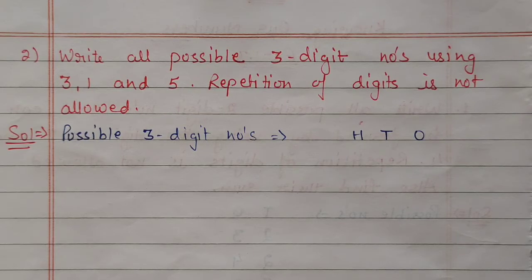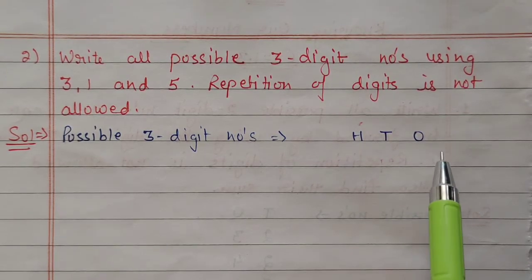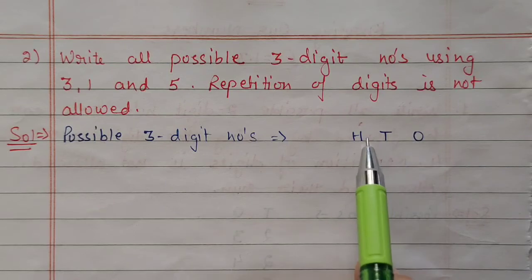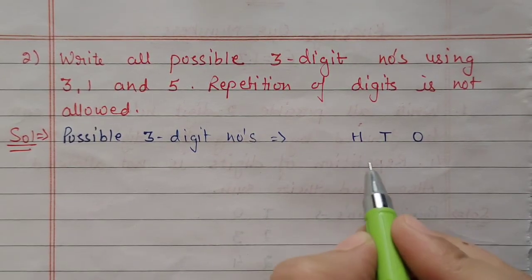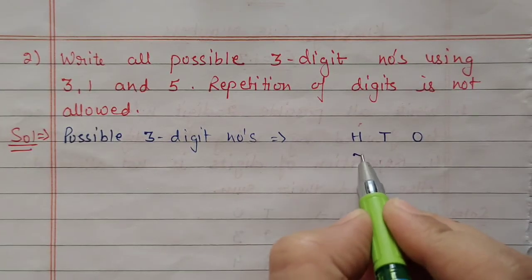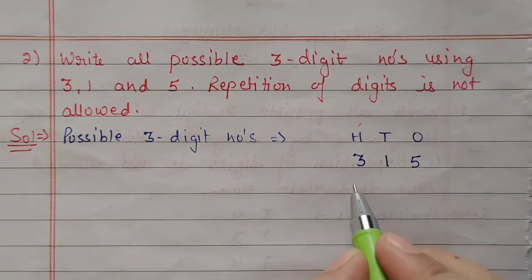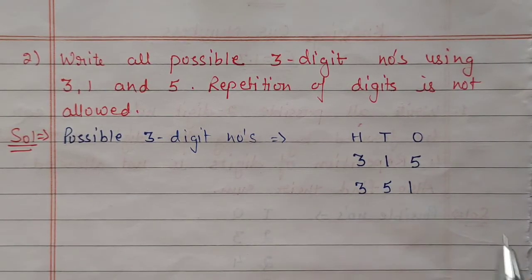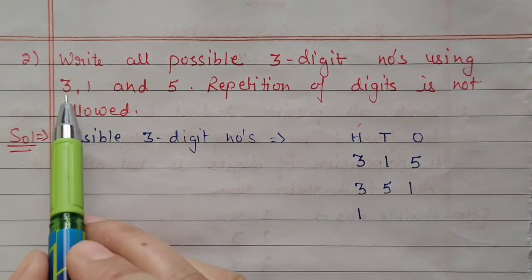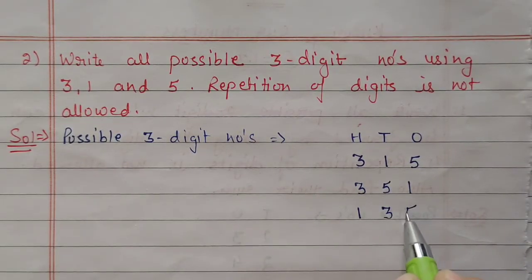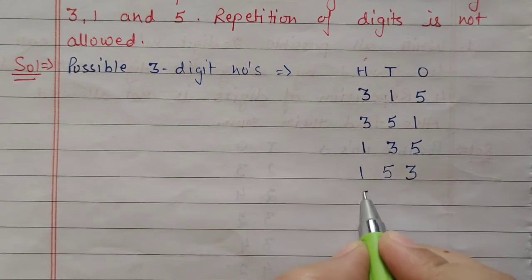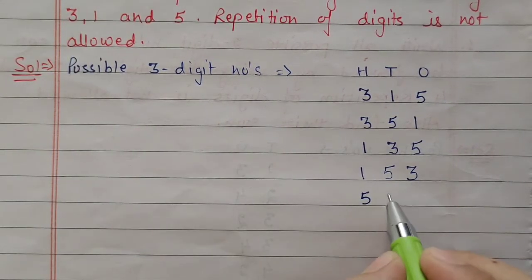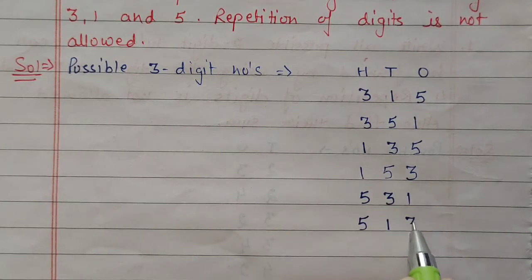Next question number 2: write all possible three-digit numbers using 3, 1, and 5. Repetition of digits is not allowed. For a three-digit number we have three places: ones, tens, and hundreds place. If hundreds place is filled with 3, remaining two places can be filled with 1 and 5, or 5 and 1. If hundreds place is 1, we can write 3 and 5 or 5 and 3. Similarly for 1, 5, 3.